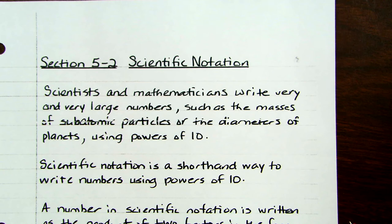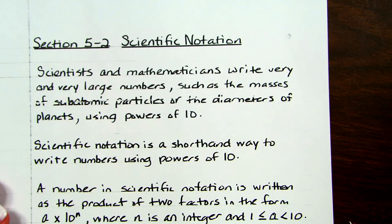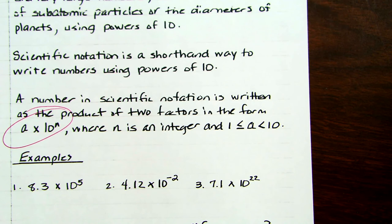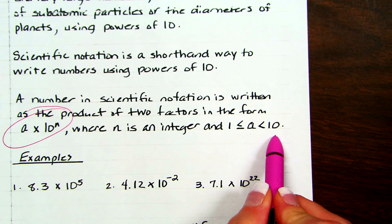You see this a lot in science classes. So this is the form that scientific notation comes in. A is just going to be a number that can be 1, but it is a number that is between 1 and 10. So it's like 9.8 or 7.5.